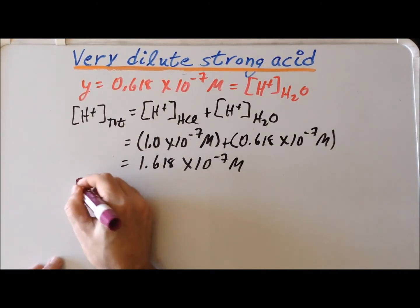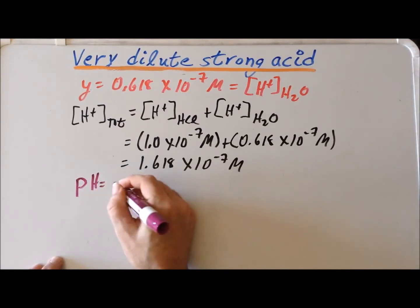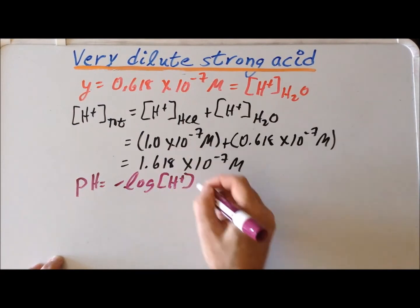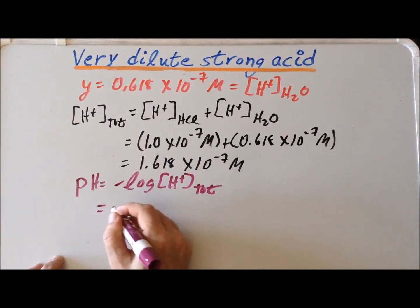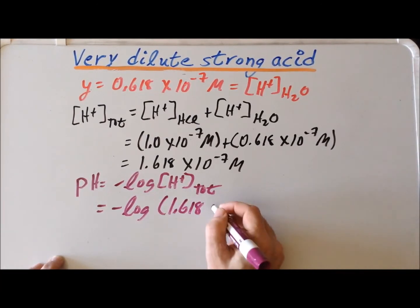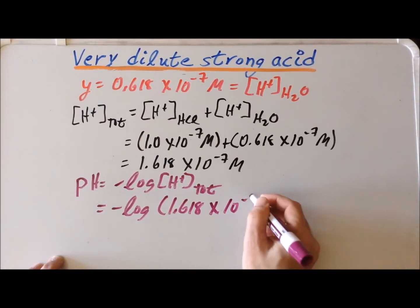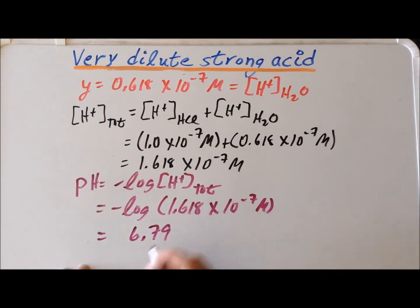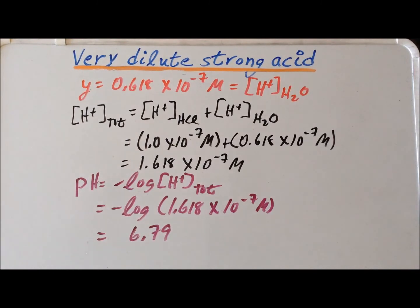Finally, by definition, pH is the negative log of the total H⁺ concentration. So pH equals the negative log of 1.618×10⁻⁷, which gives 6.79. This is slightly lower than 7 because we have a slightly acidic solution, but it is only a slight decrease.